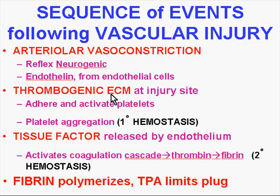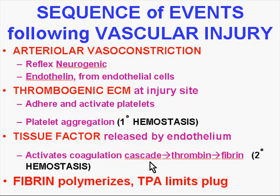Once the ECM or extracellular matrix has direct contact with platelets — because the endothelium is gone or damaged — we have the beginning of primary hemostasis or the platelet plug. And ultimately, we have what we normally think of as the whole coagulation cascade, with all the chemical factors from both the intrinsic as well as the extrinsic side of the equation, and the ultimate formation of the fibrin plug, which can then become firmer by polymerizing or dissolving.